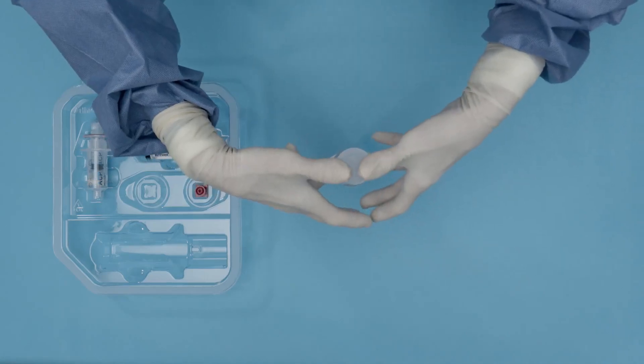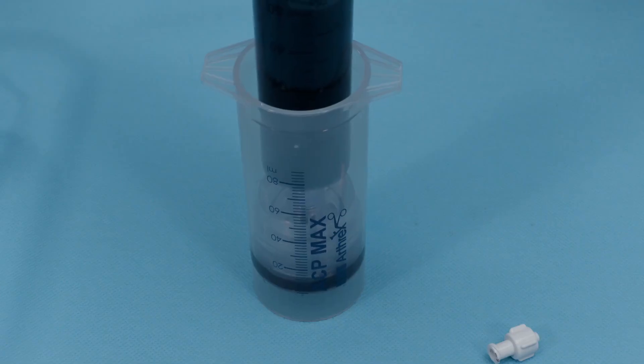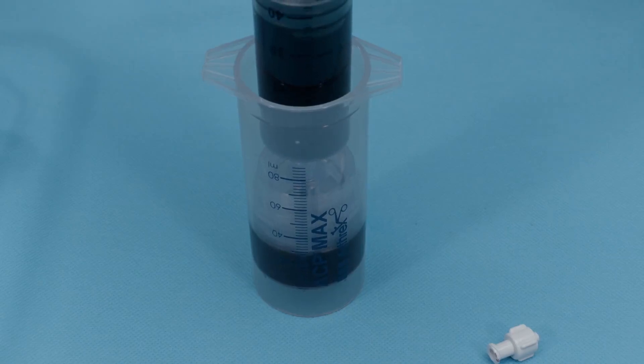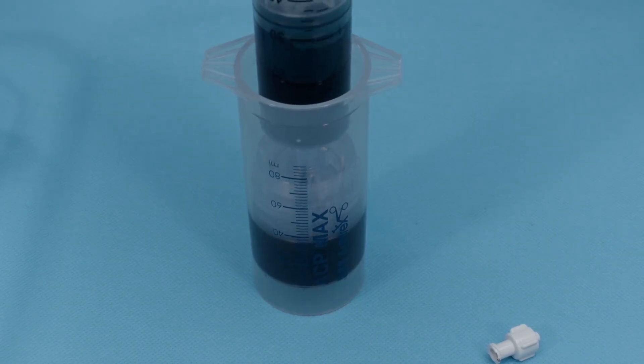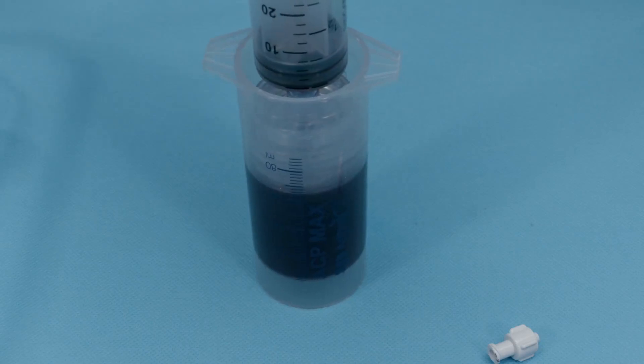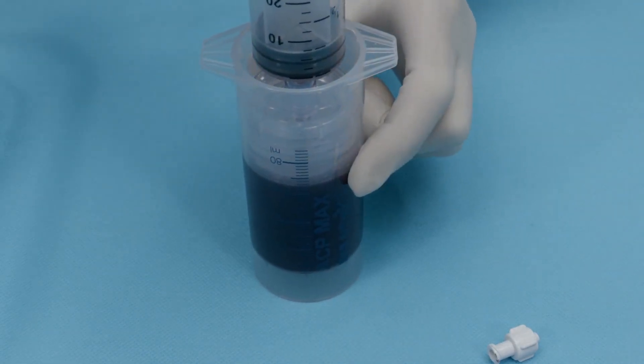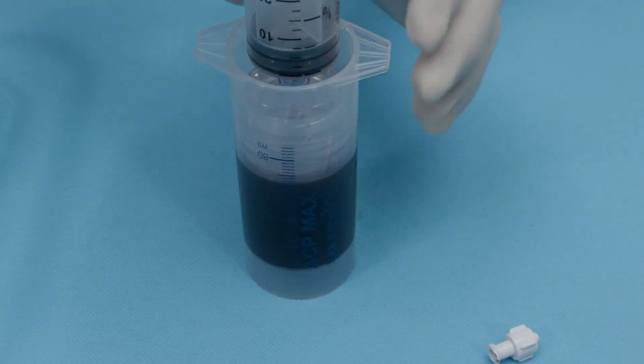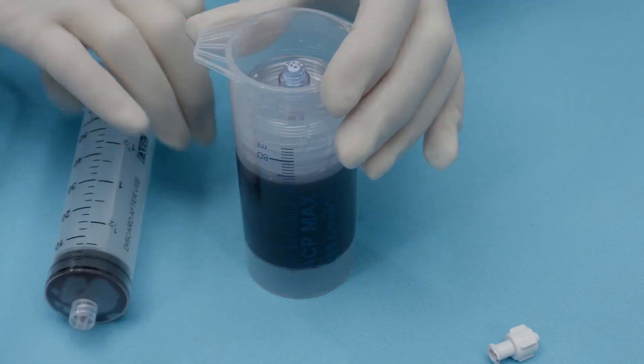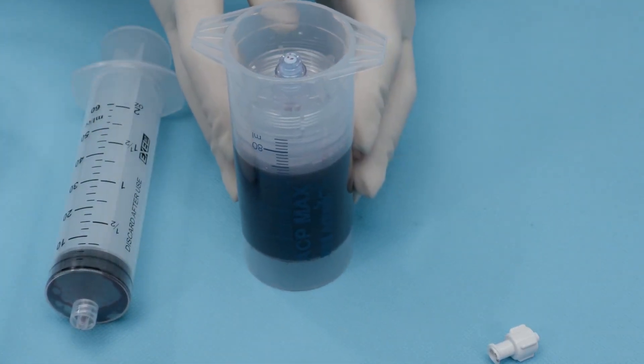Then you're going to slowly insert your peripheral blood into the ACP Max device. You don't want to do this too quickly. You don't want to create bubbles because it can lyse your platelets if you do this too quickly. Once full, you'll see we're at the 60 cc mark on the ACP Max device. We then remove our syringe and we're ready for our first spin in the centrifuge.